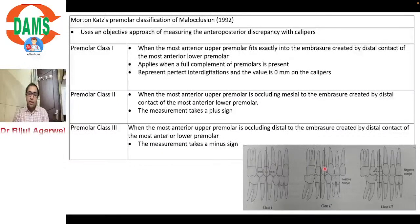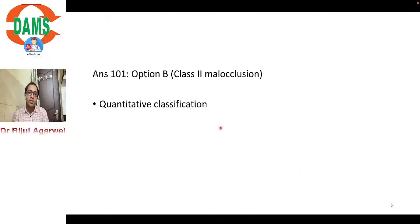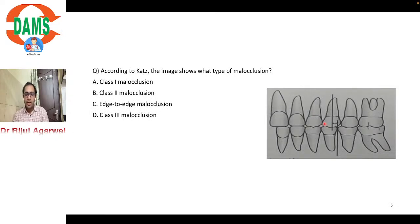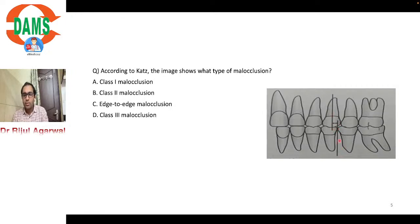An additional advantage of Catt's classification is that it is quantitative, unlike Angle's classification which is qualitative only. Catt's classification also gives a measurement in millimeters. Coming back to the original question: one line is ahead of the groove between the two premolars. If ahead, it's Class 2; if coinciding, Class 1; if behind, Class 3. The correct answer is option B, Class 2 malocclusion.